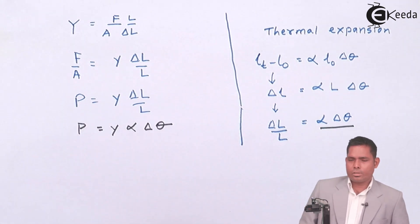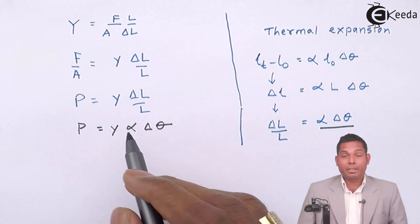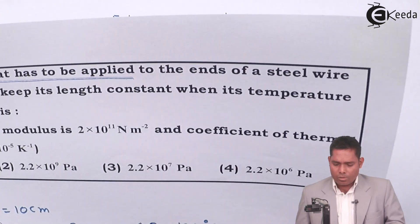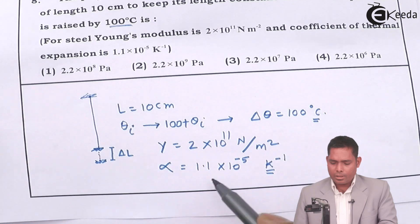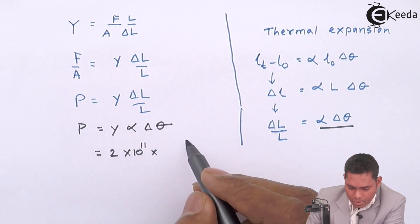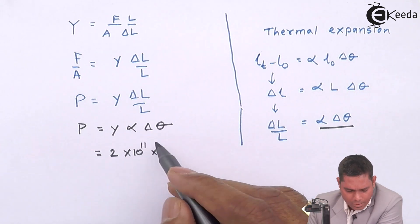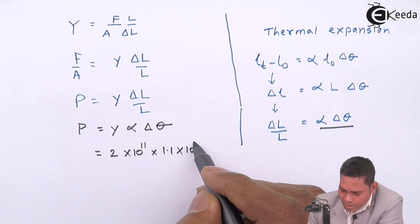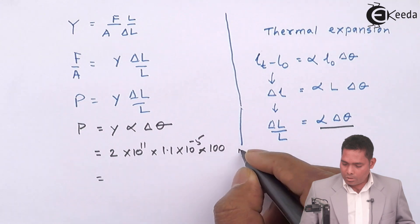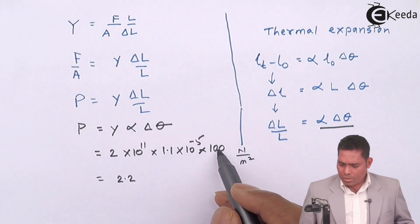This is the pressure that acts due to thermal expansion, and this same pressure must be applied externally to maintain constant length. Substituting the values: Y = 2×10¹¹, α = 1.1×10⁻⁵, and Δθ = 100. Multiplying 2 × 1.1 gives 2.2, and for the powers of ten: 10¹¹ × 10⁻⁵ × 10² = 10⁸.